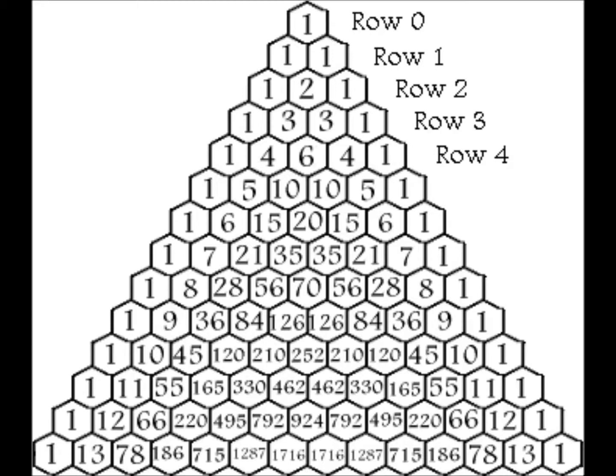To create the second row, you add 0 plus 1 equals 1, then 1 plus 1 equals 2, and 1 plus 0 equals 1. The third row is: 0 plus 1 equals 1, then 1 plus 2 equals 3, 2 plus 1 equals 3, and 1 plus 0 equals 1. In this way, the rows of the triangle go on infinitely — forever and ever.